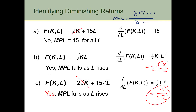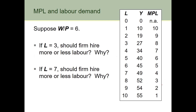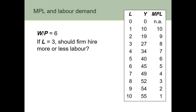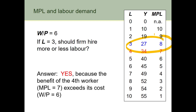Our next problem is to think about the optimal level of labour given diminishing returns. We assume the real wage W/P is 6 and we have two hiring decisions: first when L equals 3 and second when L equals 7. Looking at the case where L equals 3: the real wage is 6. If we increase labour from 3 to 4, the marginal product of labour is 7 — that's the benefit we gain. The cost is the real wage, so the firm should hire, because the benefit exceeds the real wage.